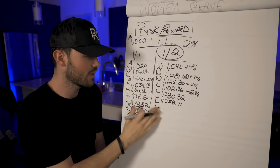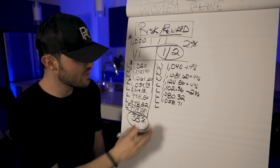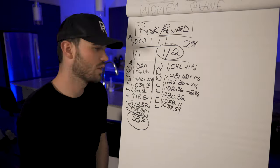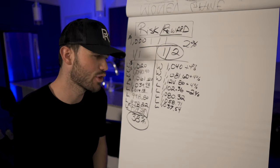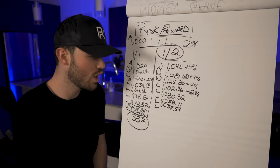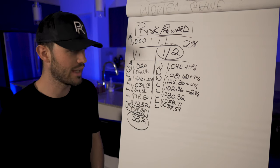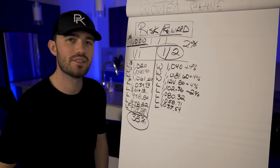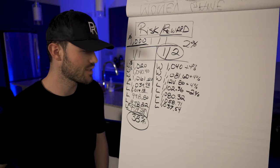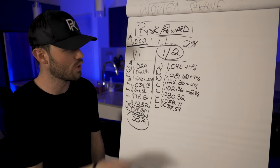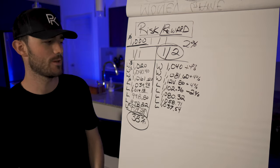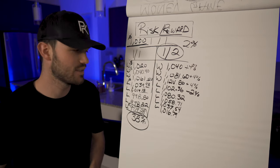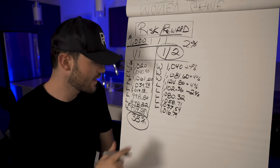Loss four leaves us at one thousand thirty-seven dollars and fifty-four cents — still in profit. And after the fifth loss, eight total trades, we finish at one thousand sixteen dollars and seventy-nine cents. Both scenarios had about a 38% win rate, but the one-to-two ratio kept us profitable.